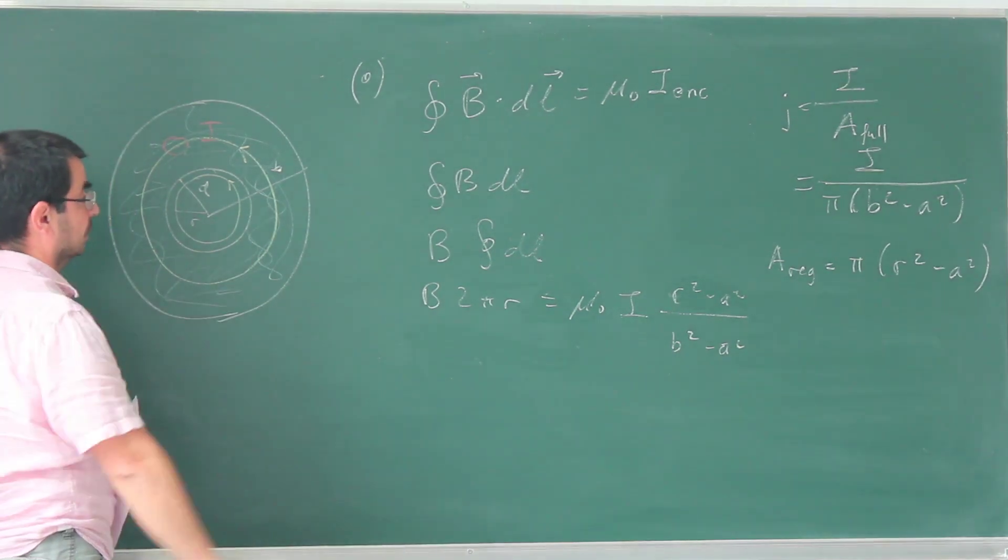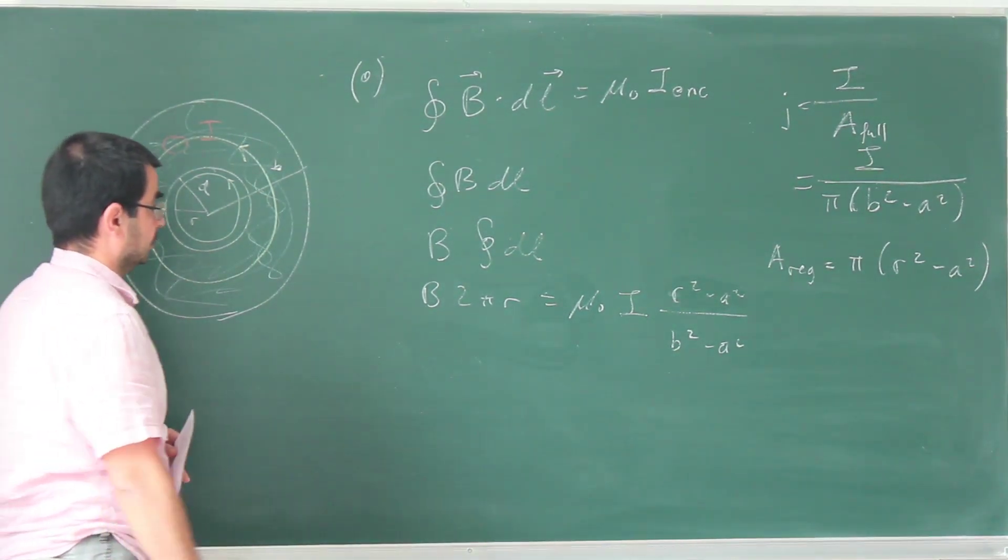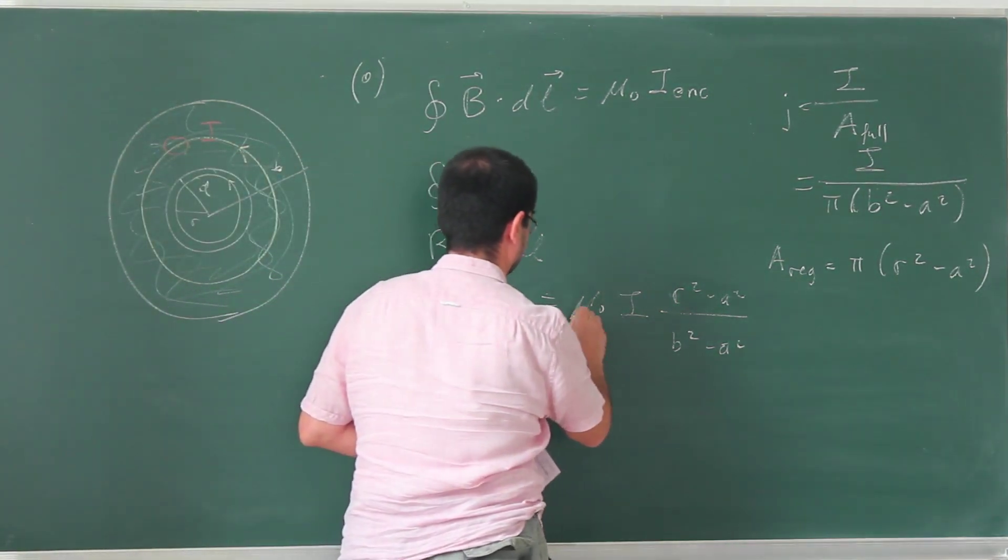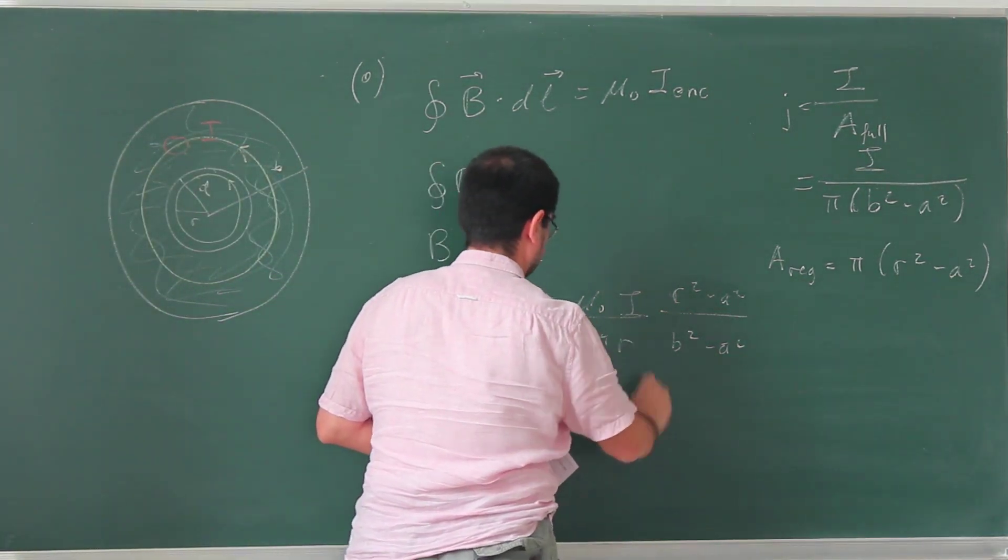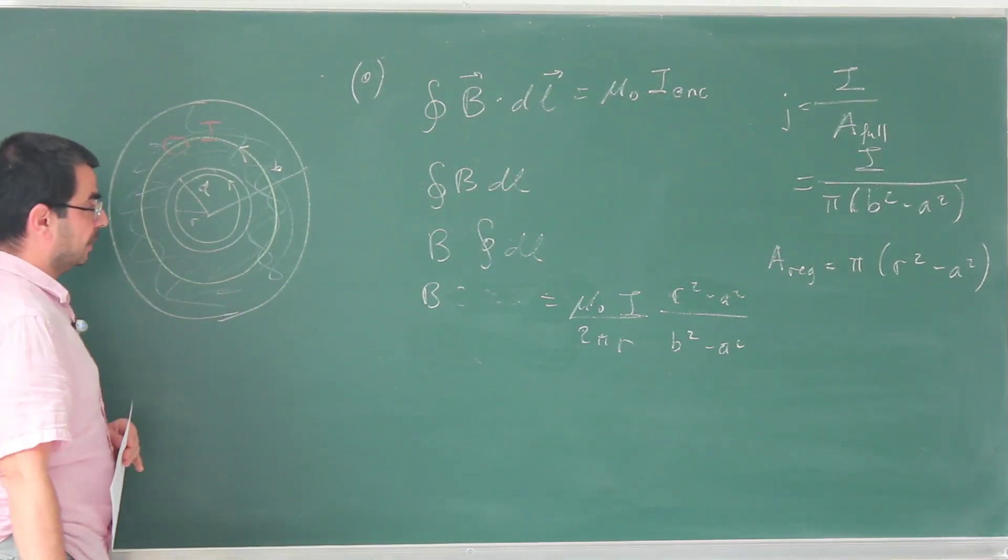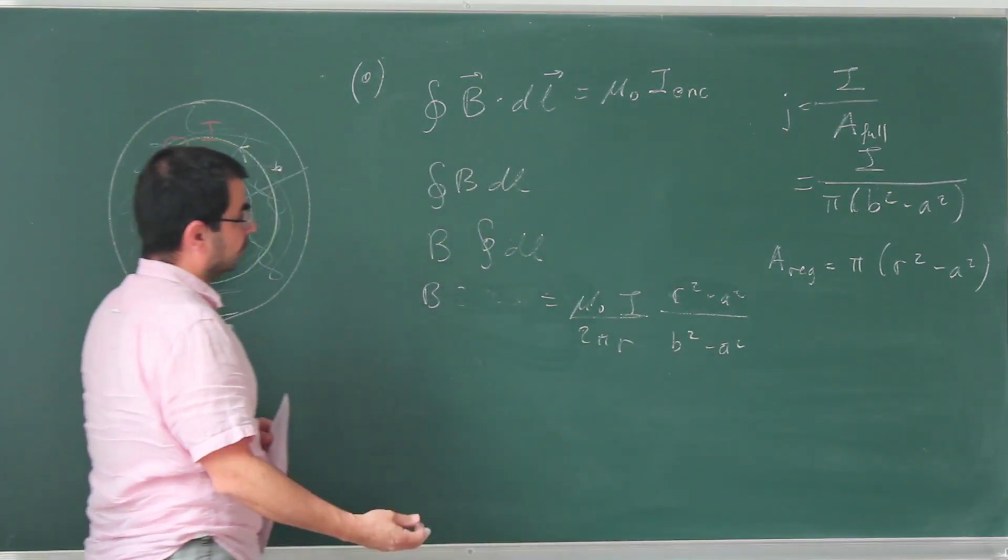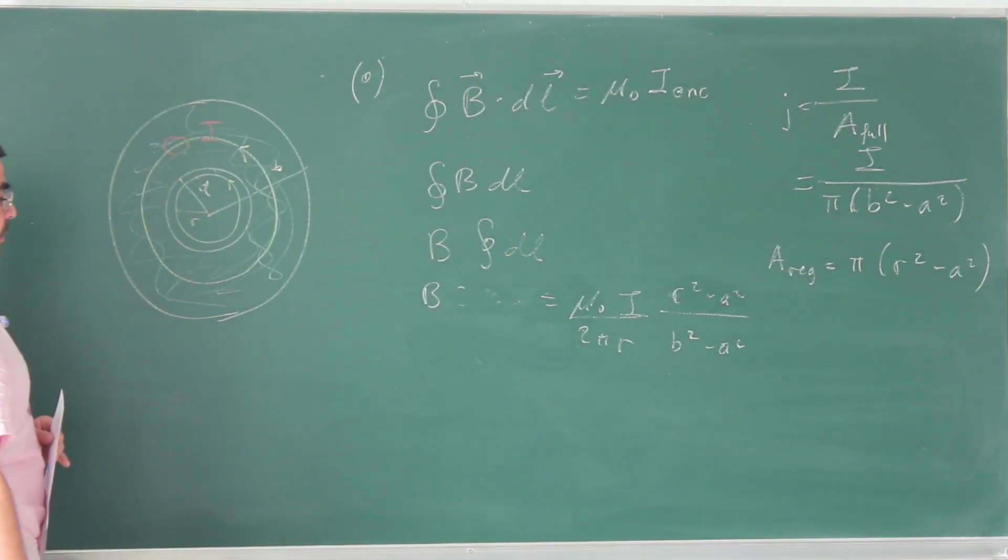And then we have to move the 2πr to the other side, and we are going to have our answer. This is going to be the magnetic field. It has a somewhat complicated dependence on r. It's not just 1 over r, because we have r² over here. But otherwise, this is a perfectly satisfactory answer.